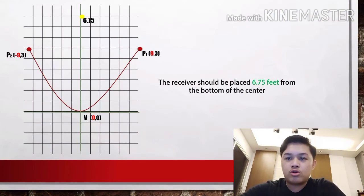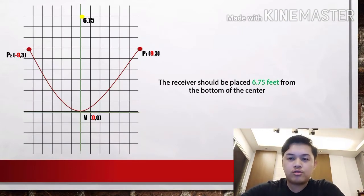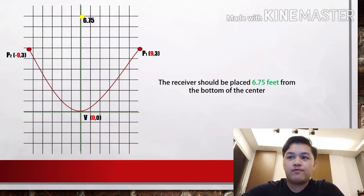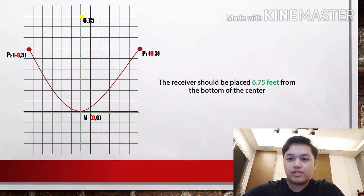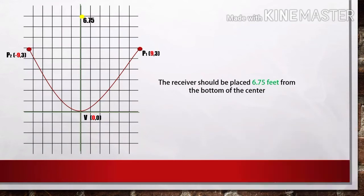So c is equal to 6.75. The conclusion is the receiver should be placed 6.75 feet from the bottom of the center. For the next part, Gian Sinapelo will give you some interesting trivia about radio astronomy.